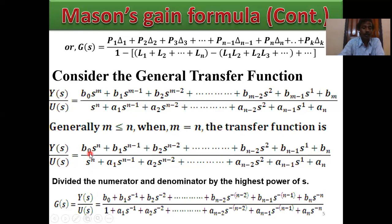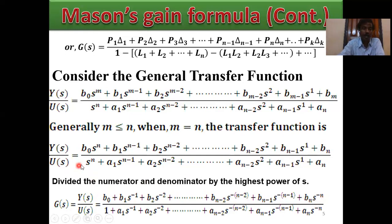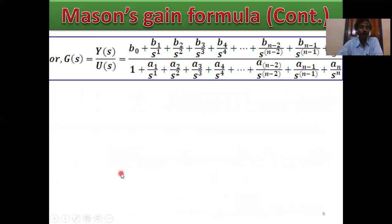G(s) equals Y(s)/U(s). After dividing: V0 (since S^N cancels), plus V1·S^(-1) plus V2·S^(-2) plus dot dot dot plus V(N-2)·S^(-2) plus B(N)·S^(-N) in the numerator, divided by 1 plus A1·S^(-1) plus A2·S^(-2) plus A3·S^(-3) plus A4·S^(-4) plus dot dot dot plus AN·S^(-N) in the denominator. So G(s) equals B0 plus B1/S plus B2/S² plus B3/S² plus dot dot dot plus BN/S^N divided by 1 plus A1/S plus A2/S² plus A3/S³ plus A4/S⁴ plus dot dot dot plus AN/S^N.